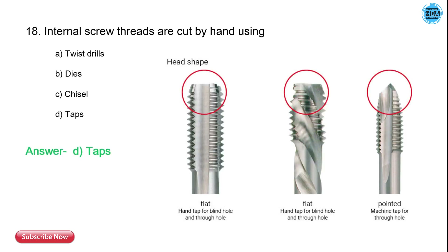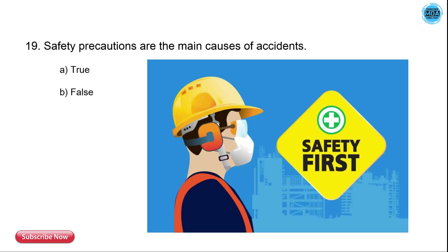The 18th question is: internal screw threads are cut by hand using what? The options are twist drill, die, chisel, and tap. The correct answer is a tap — we use taps to cut internal screw threads by hand.